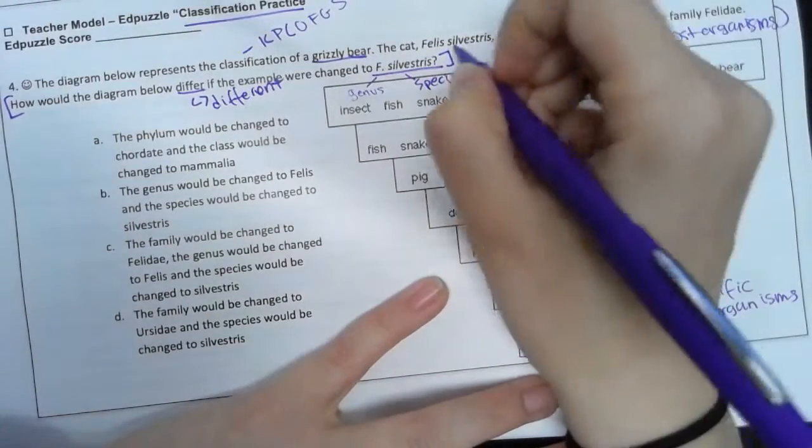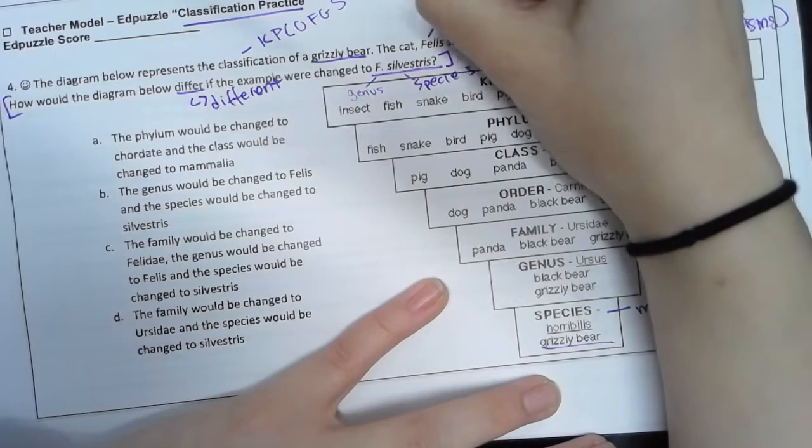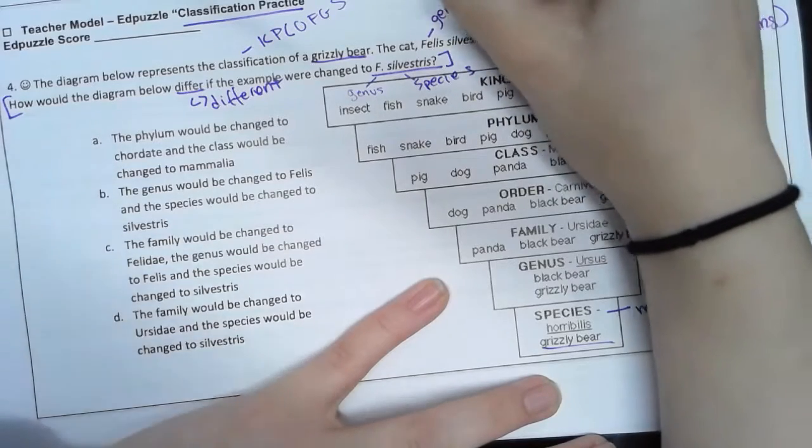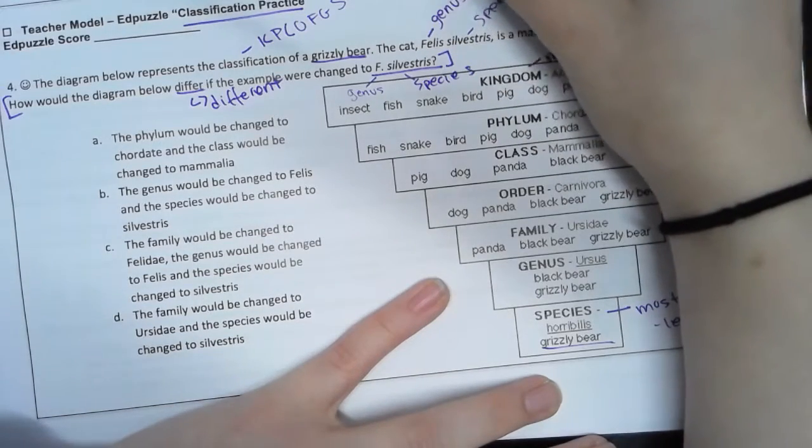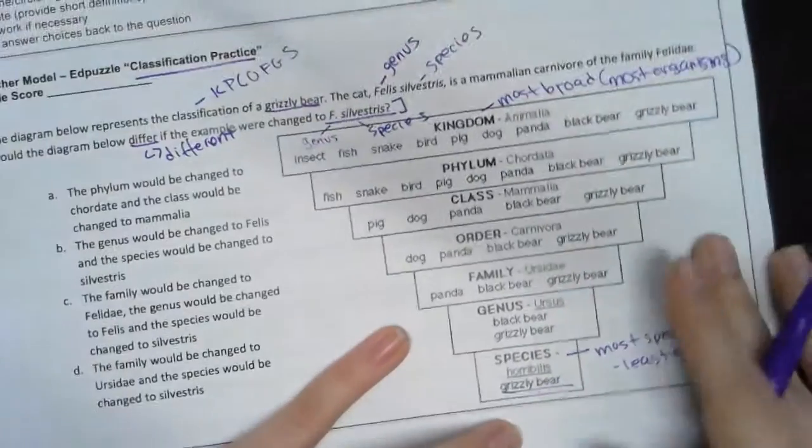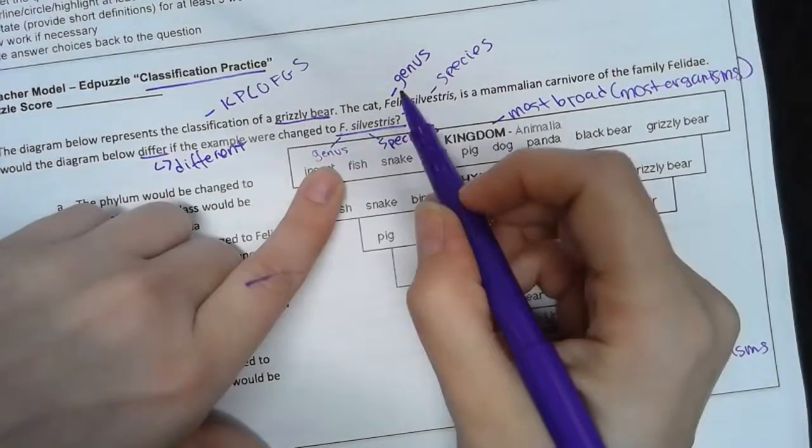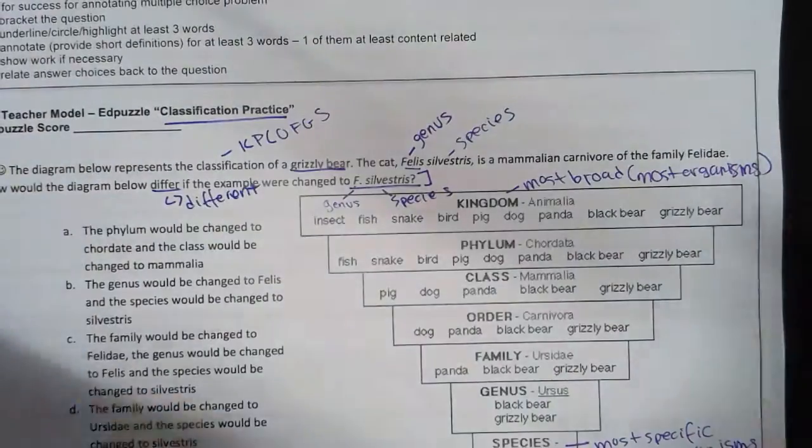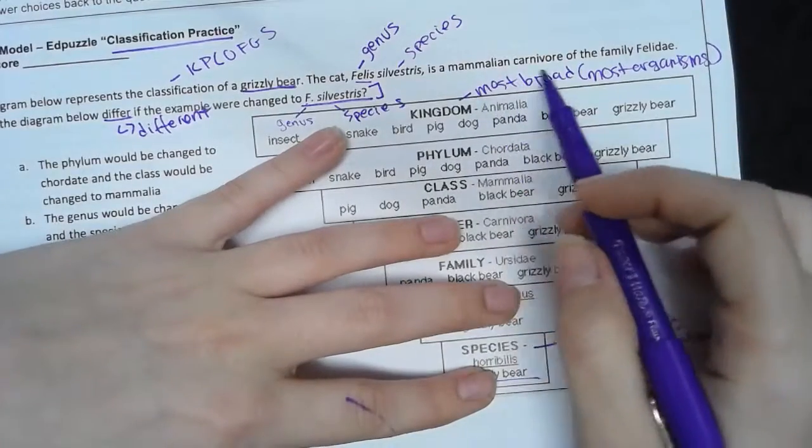Felis Silvestris - the cat's scientific name is made up of two parts. This is part of binomial nomenclature: it has the genus and the species. So this F stands for Felis. It is a mammalian carnivore of the family Felidae.